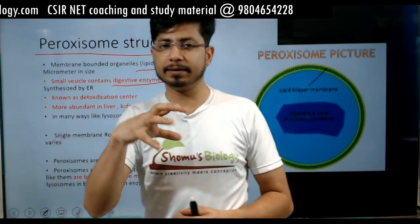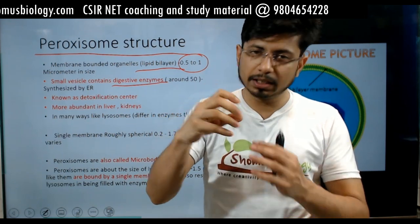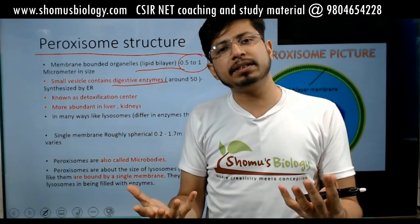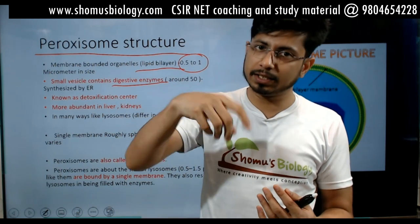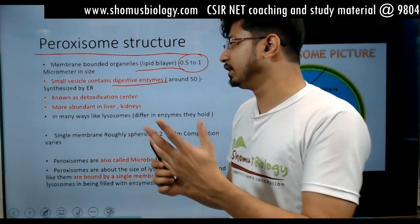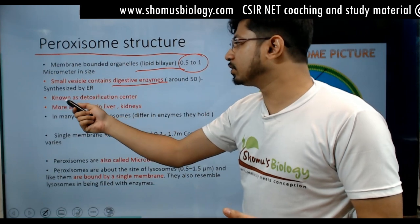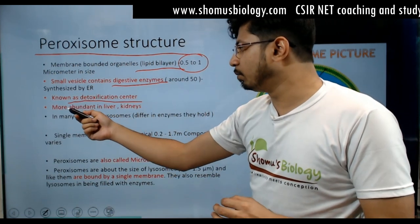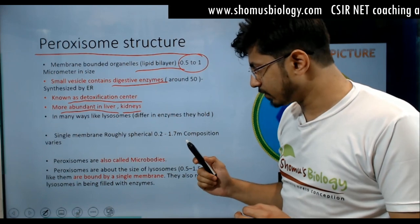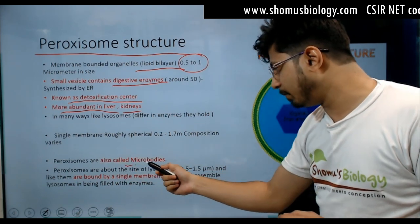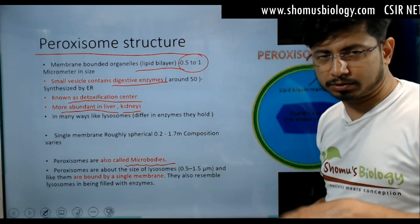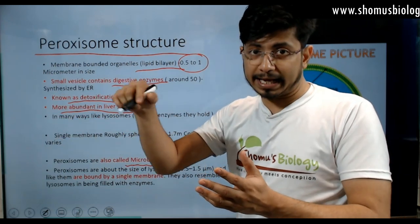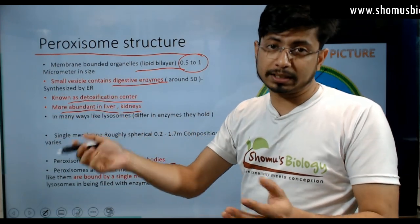If I say that paroxysome is a vesicle filled with digestive enzymes, you can also ask: the same thing repeats for the lysosome, right? A vesicle filled with digestive enzymes — so what's the difference? We also call paroxysome as a detoxification center of a cell. It's more abundant in liver and kidneys. Paroxysomes are also called microbodies. So if they say that cells have these microbodies, that means they are talking about paroxysomes.